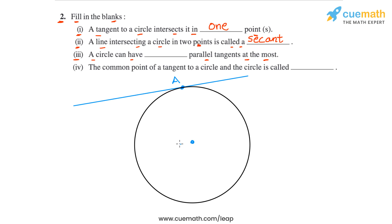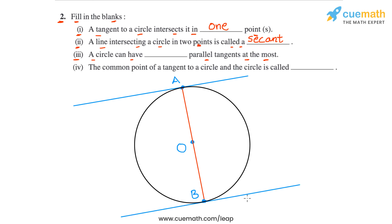To find the parallel tangent, draw the diameter through point A, passing through center O, and extend it to the other side to point B — the opposite endpoint of the diameter. Drawing a tangent at point B parallel to the first tangent, we can see that the tangents at A and B are parallel. So a circle can have at most two parallel tangents.